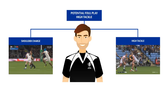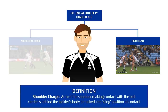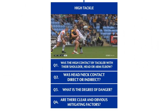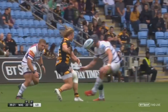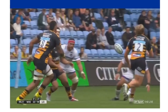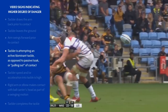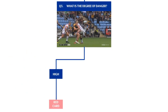Let's look at some examples of high tackles. Match officials must first determine whether the high contact is a shoulder charge or a high tackle. If they have eliminated a shoulder charge, they are dealing with a high tackle and must ask four questions to decide on the appropriate sanction. The first question is: is the high contact from the tackler's shoulder, head, arm, or elbow? In this example, there is direct contact to the tackled player's head from the shoulder of the tackler. The degree of danger is high, indicated by a dominant tackle attempt, the tackler accelerating into contact, and the tackler completing the tackle. For a high degree of danger, the initial decision would be a red card; if the degree of danger is low, the initial decision would be a yellow card.